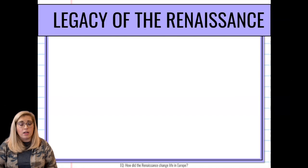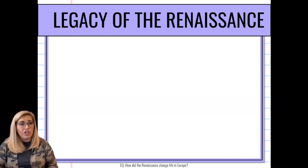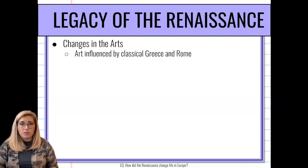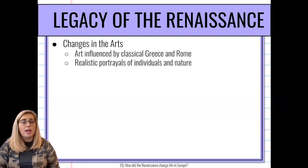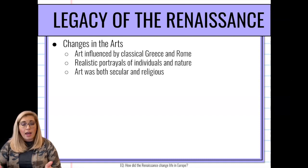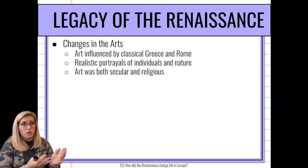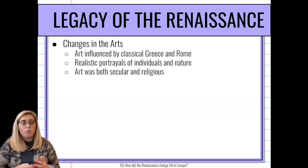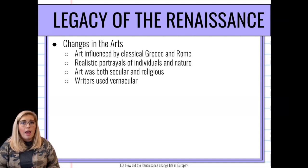Some of the legacies of the Renaissance — what came out of it — fall into two big categories: changes in the arts and changes in society. Art was heavily influenced by classical styles from Greece and Rome. We see more realistic portrayals of individuals and nature. Art started to become both religious and secular — Leonardo da Vinci is a great example, with the Last Supper being religious and the Mona Lisa being non-religious. We have writers using vernacular, writing in their own language, and art praising individual achievement.